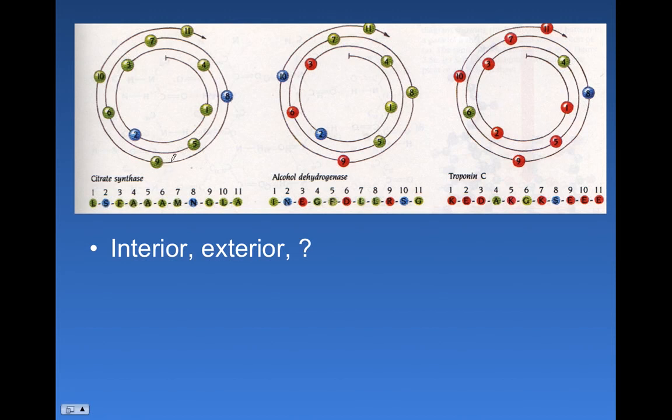Green in this case is the nonpolar amino acids, the blue is our polar but uncharged amino acids, and red is going to be our polar charged. So when we look at citrate synthase, overall we'd say this is a pretty nonpolar alpha helix.